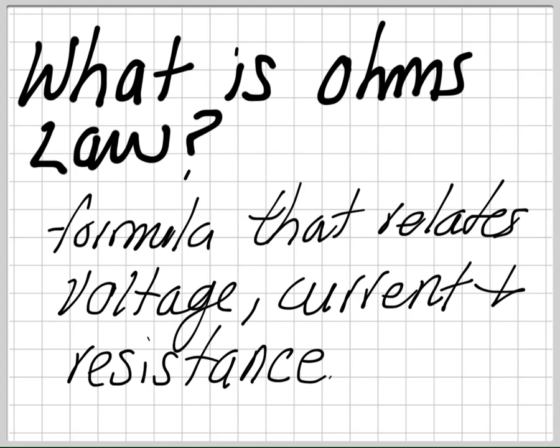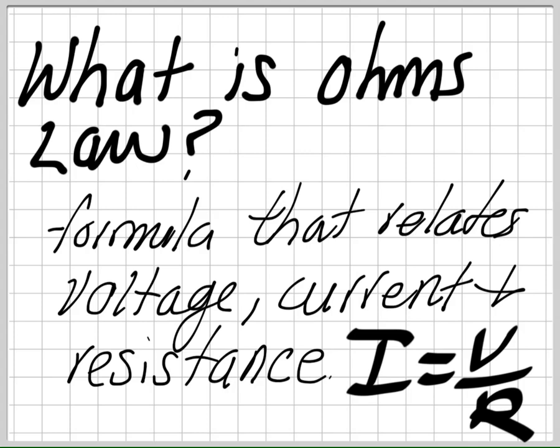current, and resistance to one another. If you know one of them, you can find the others. Here's the actual formula: I equals V over R. If you know current and resistance, you can find voltage, or if you know voltage and resistance, you can find current.